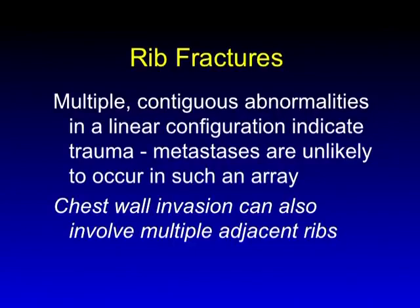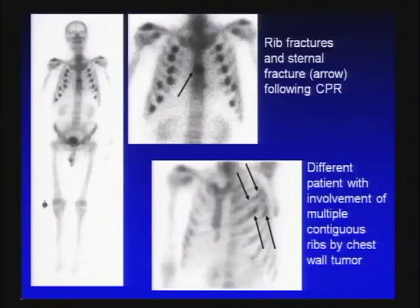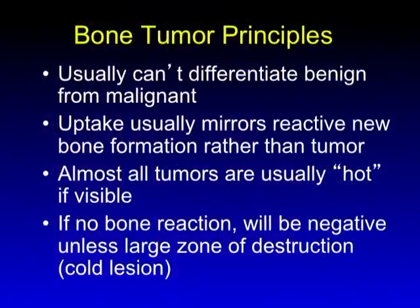Rib fractures are very commonly seen on bone scan, usually as incidental findings. A fracture on bone scan looks like a fracture on CT — a short segment transverse abnormality. They often involve multiple ribs and are fairly contiguous. If you see contiguous abnormalities in a row that look like fractures, they probably are fractures. Here we have multiple anterior rib fractures as well as a transverse sternal fracture — CPR-induced abnormalities. The commonest location is at the costochondral junction. On the lower right is a patient with contiguous rib involvement that looks entirely different — this is chest wall involvement by tumor, in this case chest wall sarcoma, but also seen in lung cancer with pleural invasion.